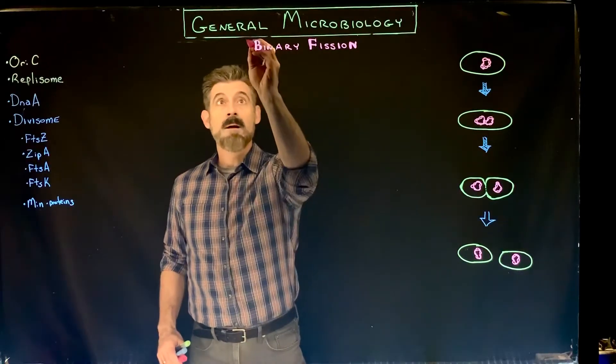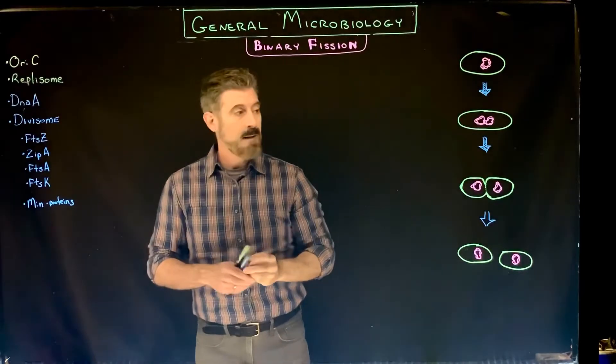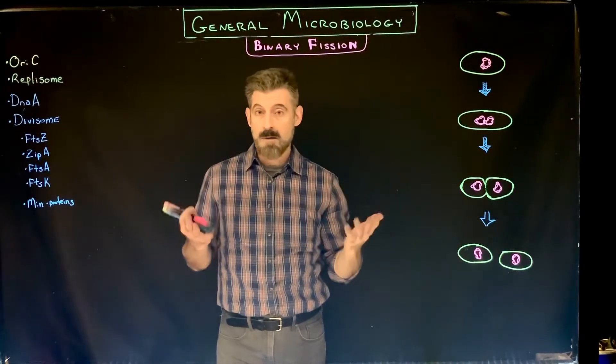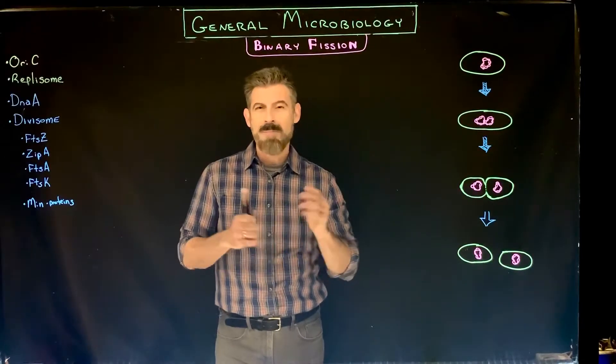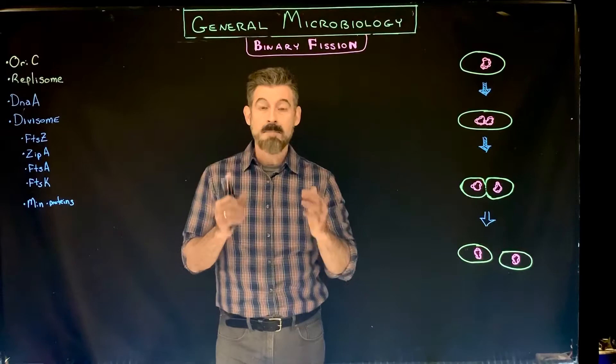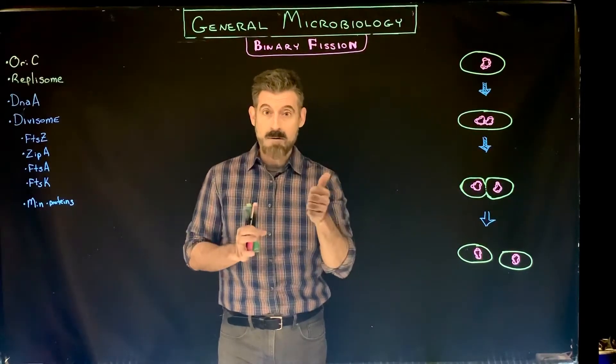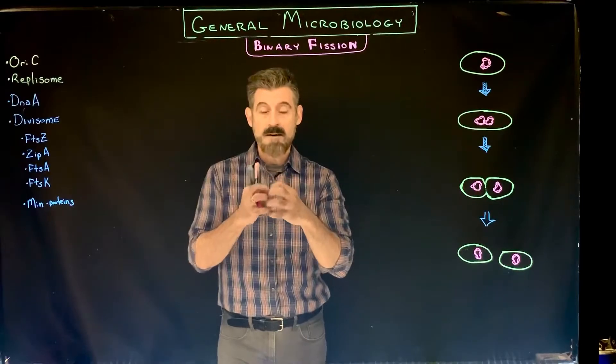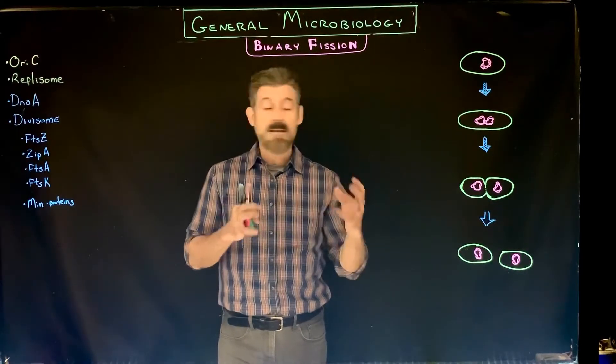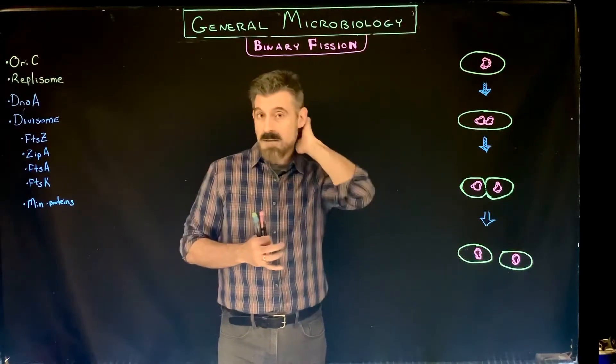We're going to go over the process called binary fission, which in bacteria is the process of cell division. When we study eukaryotic cells, we're talking about mitosis, and that process has two actual events happening. There's karyokinesis, the process of dividing the nucleus, and cytokinesis, the process of dividing the cytoplasm. Here we're going to go over something similar because there's a number of things that have to happen.